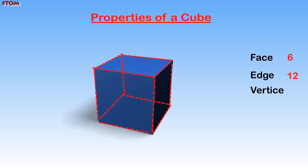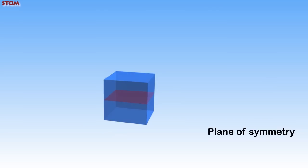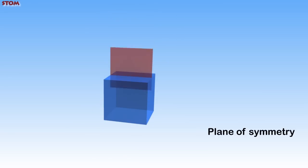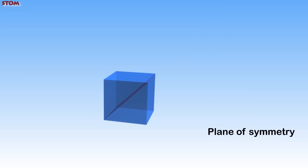For the number of vertices, let's also count: one, two, three, four, five, six, seven, and eight. There are eight vertices. The plane of symmetry is where the cube is divided into two equal halves. As shown on the screen, the cube has one, two, three, four, five, six, seven, eight, and nine planes of symmetry.